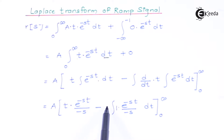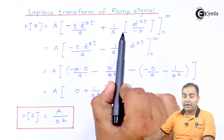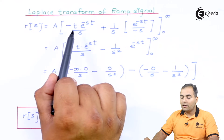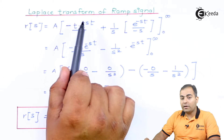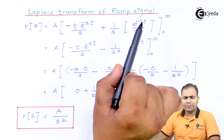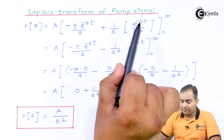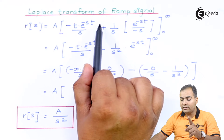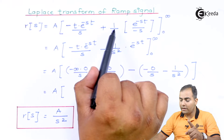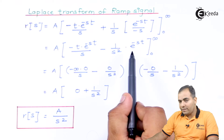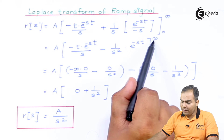After taking −s common outside, the middle sign changes to plus. The integral of e^(−st) again gives e^(−st)/(−s), and combining with the 1/s already present, the minus sign changes the plus to minus, giving 1/s². So the result before substituting limits is: [−t·e^(−st)/s − e^(−st)/s²], to be evaluated from zero to infinity.